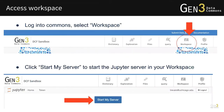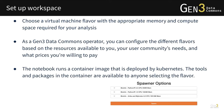After you launch the Data Commons homepage, you may click the workspace button. You then have the option to start your server in Gen3. After clicking, you will see the options shown on the right. You are asked to choose a virtual machine flavor with the appropriate memory and compute space required for your analysis. As a Gen3 data commons operator, you have the freedom to configure different flavors based on available resources, your user community's needs, and cost. The notebook runs in a container image deployed by Kubernetes, and the tools and packages in the container are available to anyone selecting that flavor.